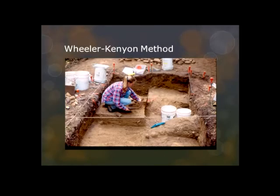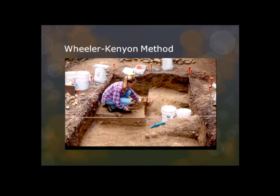Another method is called the Wheeler-Kenyon method. You take selected portions of your site and divide them into squares, five meters by five meters. Even when you find things, you leave the walls separating the squares and maintain the grid — it allows you to pinpoint the position of everything you find. When you find something you take a picture of it exactly where it was found. Archaeologists have also come to see that it is better not to excavate the whole site — leave something for other people who might come along with better methods to check your work and correct it if necessary.